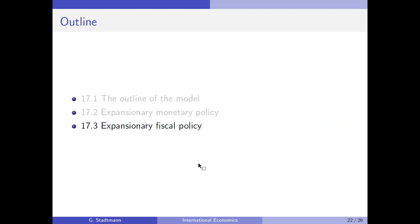To sum up: we have looked at an expansionary monetary policy. The central bank is able to influence the GDP level by performing it, giving the central bank an instrument to cure the underlying problem of this economy. The central bank can fight the recession and reduce unemployment. In the next chapter, we will check whether expansionary fiscal policy is also effective in increasing GDP.